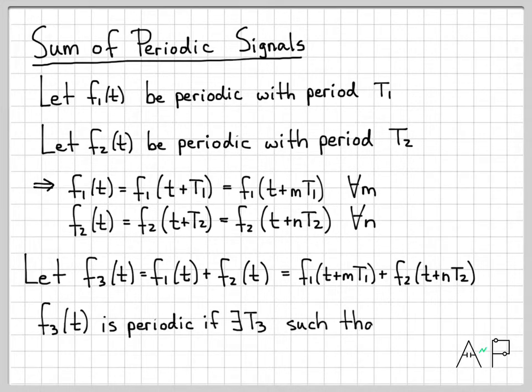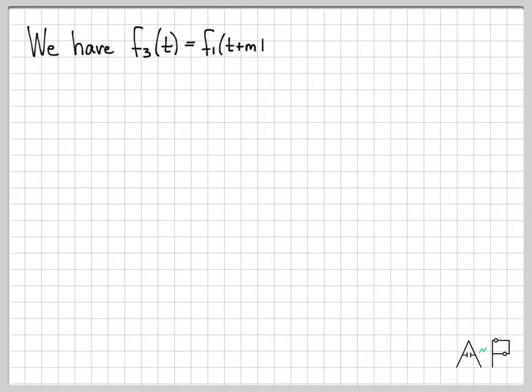The real question is: is f3(t) periodic? If it's going to be periodic, I need to find some number. There exists some T3 such that when I shift t by T3, I end up back where I started. So I need f3(t) equal to f3(t + T3) for all time. On the next page let's evaluate this, which means replacing t with T3 and working through the math to see what constraint that puts on T1 and T2.